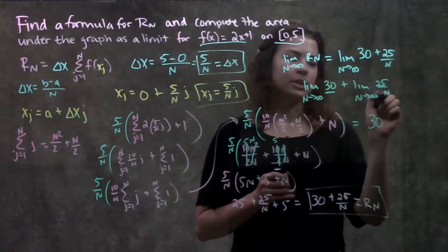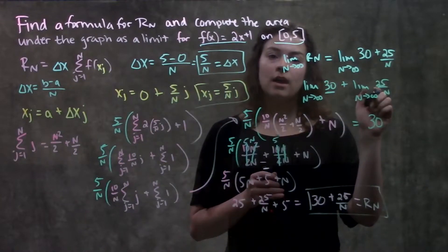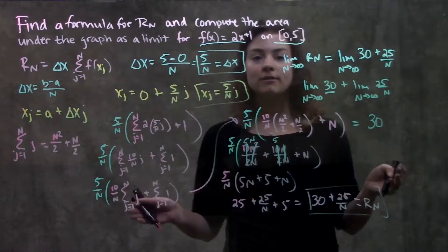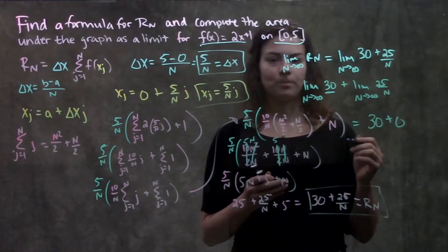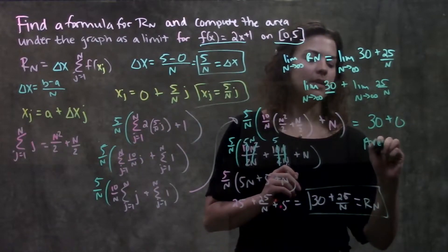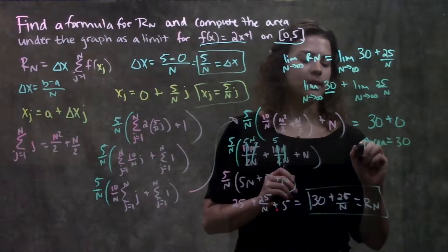Imagine if I were to plug infinity into this variable for n, I have a super huge number divided into a small number like 25, that will be basically zero. So, that means that my area is equal to 30.